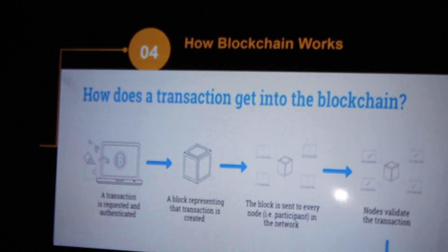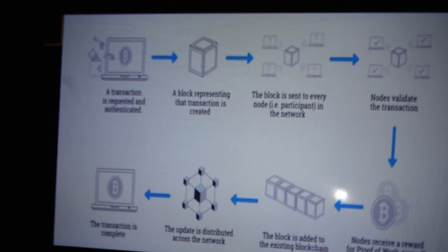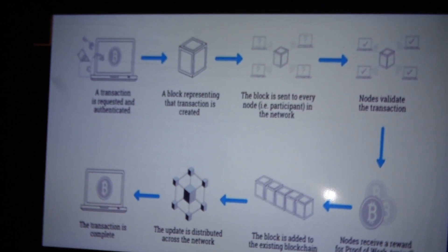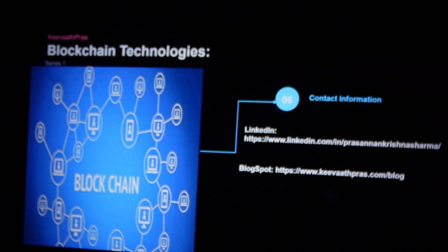How does the transaction get into the blockchain? A transaction is requested — say I bought a piece of land — and immediately a block representing that transaction is created. The block is sent to every node, the participants in the network, and they validate the transaction. The persons who validate it correctly receive a reward, called proof of work, which also applies to cryptocurrency. Once validated, the block is added to the existing blockchain, the network is distributed, and the transaction is complete. This is foolproof and no one can tamper with it.